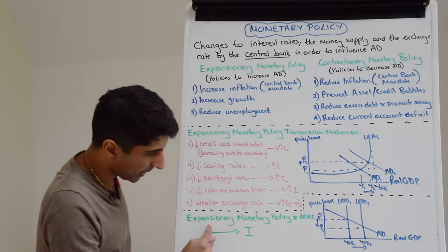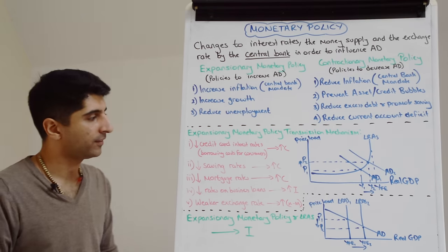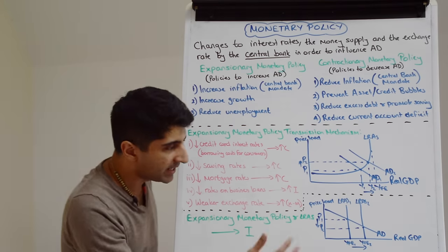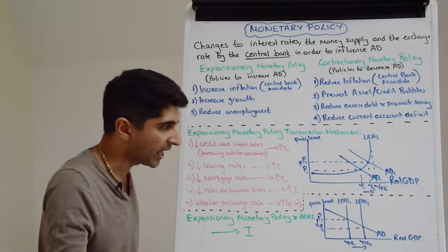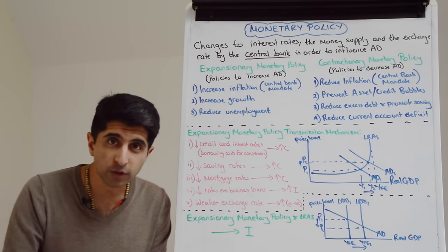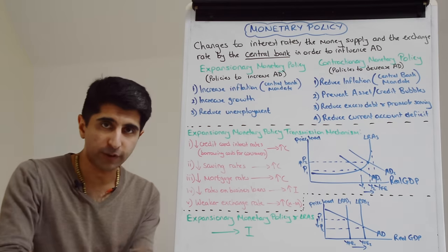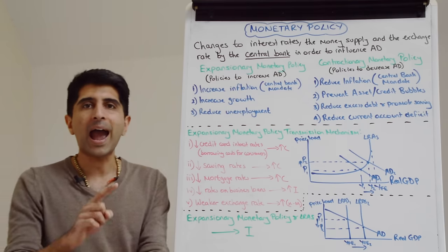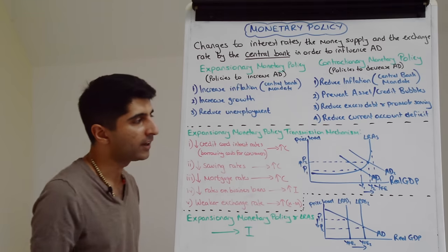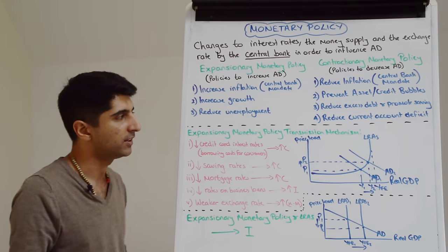Crucially, there is also a link between expansionary monetary policy and long-run aggregate supply. Monetary policy is a demand-side policy, so any link to LRAS will just be a nice side effect — not the core intention. But there could be this boost via an increase in investment. If interest rates on business loans come down and businesses borrow more and invest, then investment can boost LRAS via an increase in the quantity of capital, an increase in the quality of capital, and an improvement in the productive efficiency of the economy. So we see improvements in long-term growth rates as well as short-term growth rates via the increase in AD. But this is very much a nice side effect — it's a demand-side policy at its core.